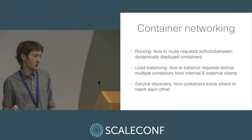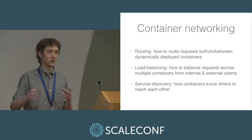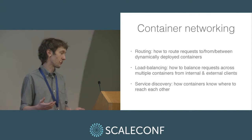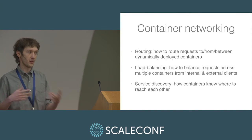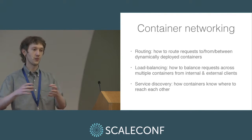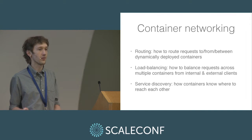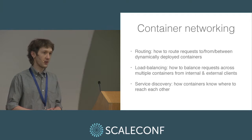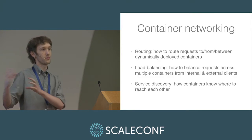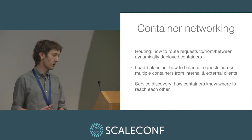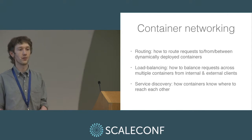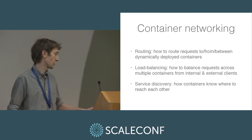Container networking is primarily three things we want to do in the cluster: we want to route between all these different containers running on the different hosts, and we want to do this dynamically because we don't really want to care where the containers are — they're just somewhere on the cluster. And load balancing — we want to be able to load balance across multiple instances of the same container. And finally, service discovery: how do the containers know where each other are if they need to connect to one another?